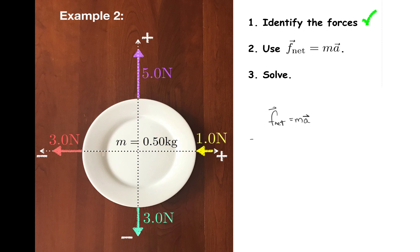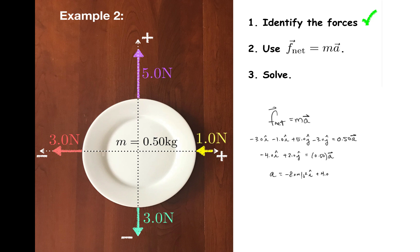The forces in the x direction are negative 3.0 i hat and negative 1.0 i hat, and the forces in the y direction are positive 5.0 j hat and negative 3.0 j hat. I'll set these equal to 0.50 a, and then I'll collect terms and simplify. The acceleration for the plate turns out to be a is equal to negative 8.0 meters per second squared i hat plus 4.0 meters per second squared j hat. This acceleration is given in component form. If I want to draw that acceleration, the components would look like this, so the overall acceleration would look like this.